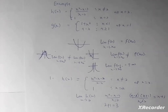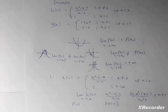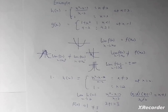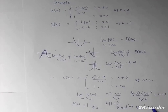The limit is 3. Now let's look at the functional value. The functional value f(2), from our piecewise function at x = 2, is equal to 1. So f(2) = 1, and it is not the same as the limit value of 3. Therefore, the function is discontinuous at x = 2.